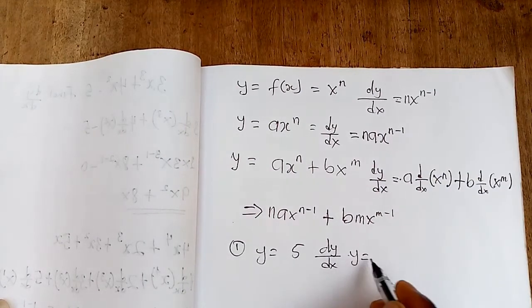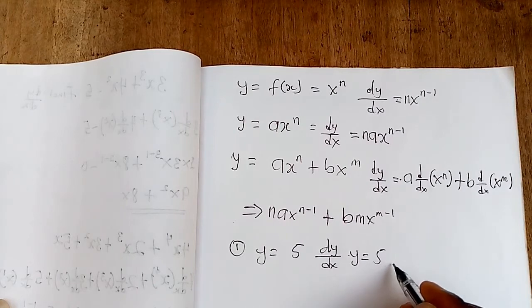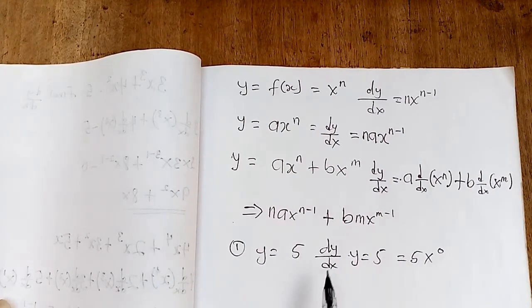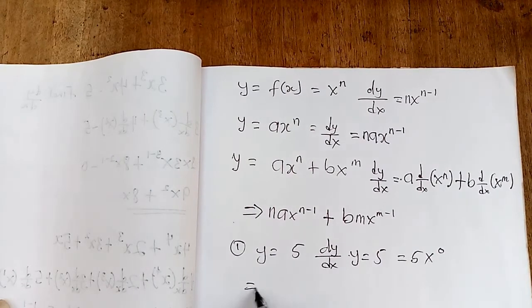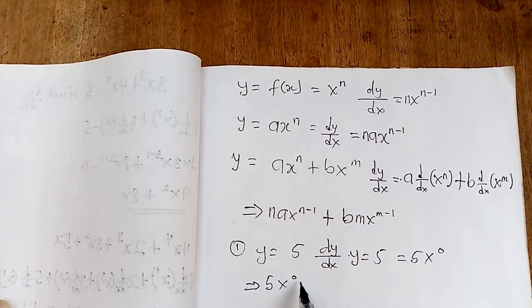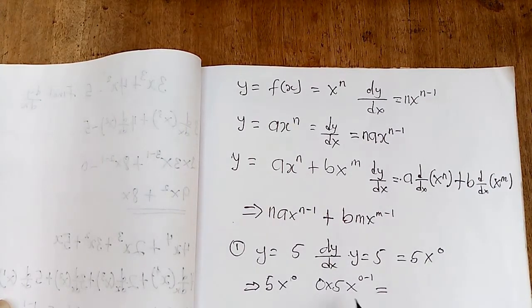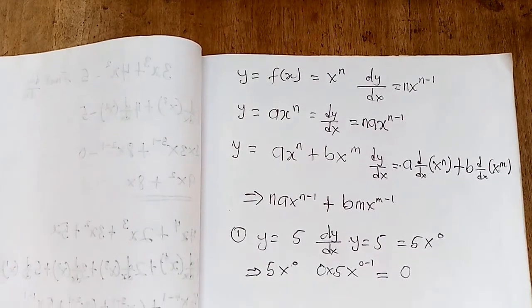y = 5 can be written as y = 5x^0, because any number raised to the power zero is 1, and 1 times 5 is 5. So dy/dx of 5x^0: the zero falls back and multiplies the constant 5, giving 0 times 5 times x^(0-1), which equals zero. This proves that the derivative of any constant is zero.